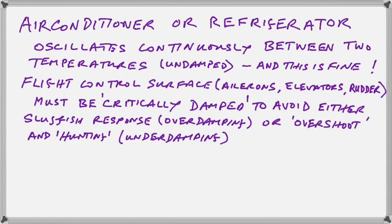That would be a completely undamped situation where no attempt is made to control this oscillation. That behavior is fine for an air conditioner or refrigerator, but it's quite unacceptable when you're dealing with an aircraft. Consider now a situation where we have the flight control surfaces of a high-flying, high-powered aircraft, where response time is absolutely necessary and control has to happen with split-second timing. You have the ailerons, the elevator, and the rudder — the three principal surfaces on the aerofoil to control its flight.